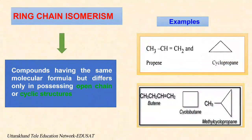Next is ring-chain isomerism. In ring-chain isomerism, one of the isomers has an open chain structure whereas the other has a ring structure. Propene and cyclopropane are ring-chain isomers with the molecular formula C3H6.